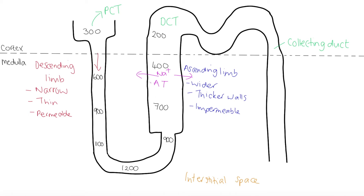As sodium ions move out of the ascending limb into the interstitial space by active transport, we now have sodium ions in that interstitial space. This lowers the water potential of the interstitial space. So the descending limb, which is permeable to water, now has a higher water potential than the interstitial space, and water in the filtrate moves by osmosis from the area of high water potential to the area of lower water potential.